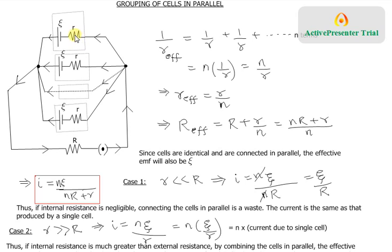We use the expression for finding effective resistance in a parallel connection: 1/R_eff = 1/R₁ + 1/R₂ + ... So we get 1/r added n times, which gives n/r. Taking the reciprocal, the effective internal resistance of all these cells in parallel is r/n.